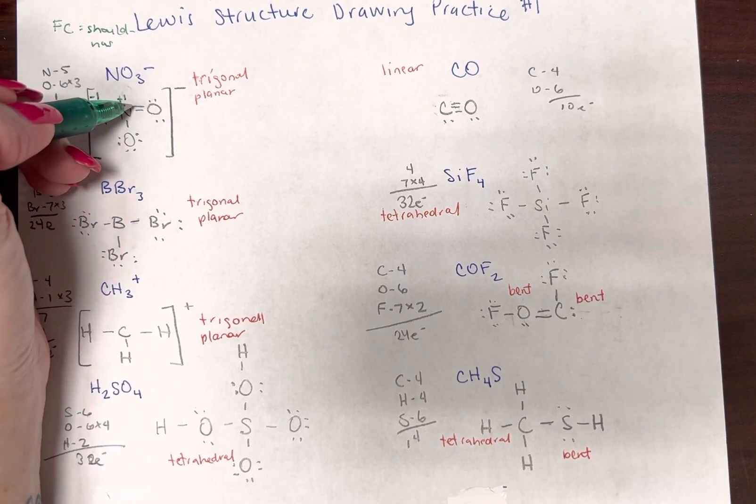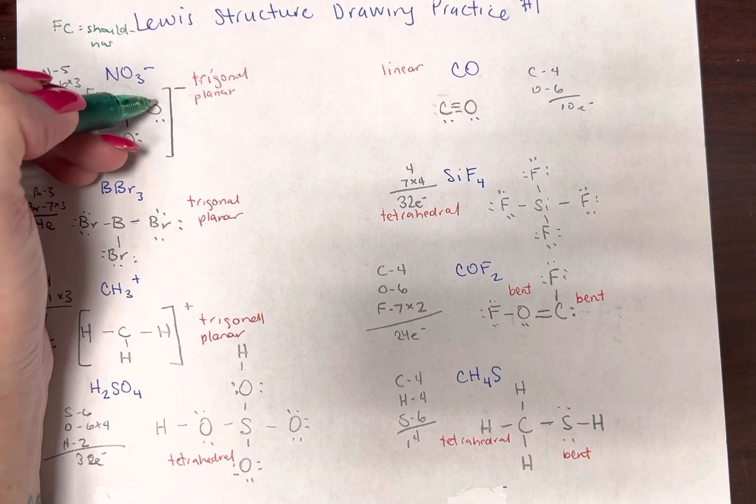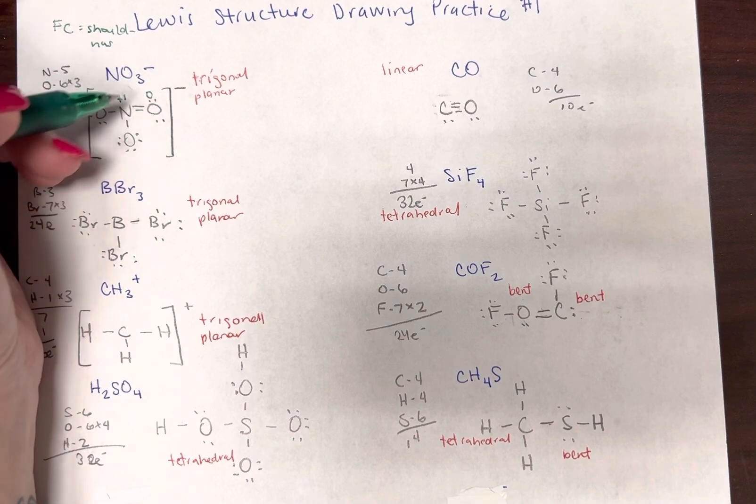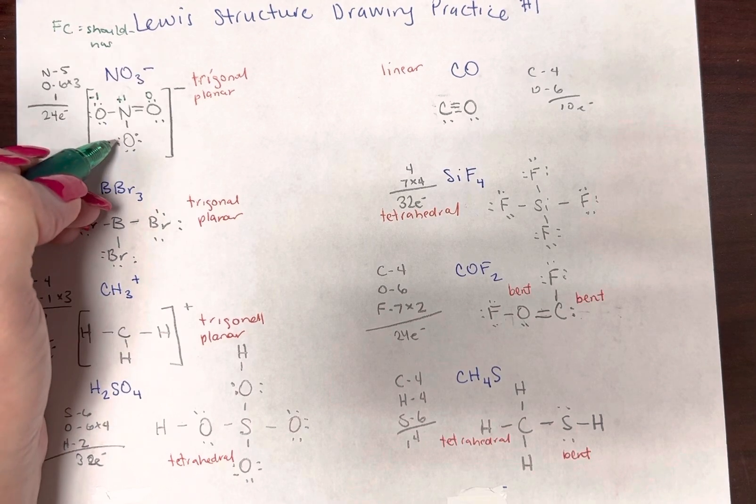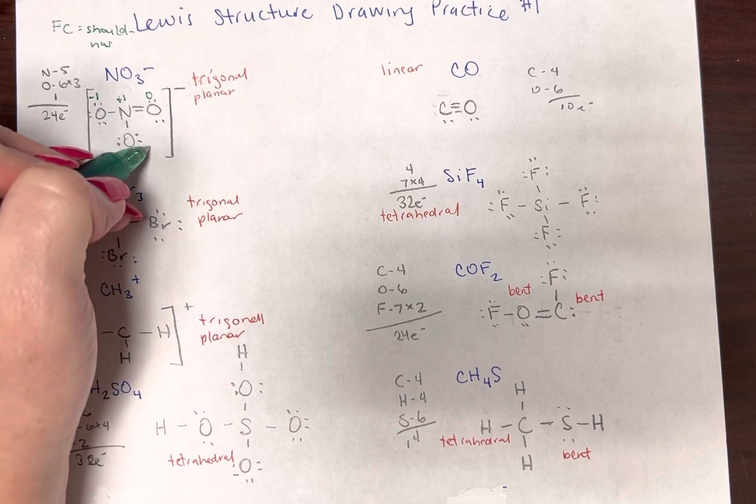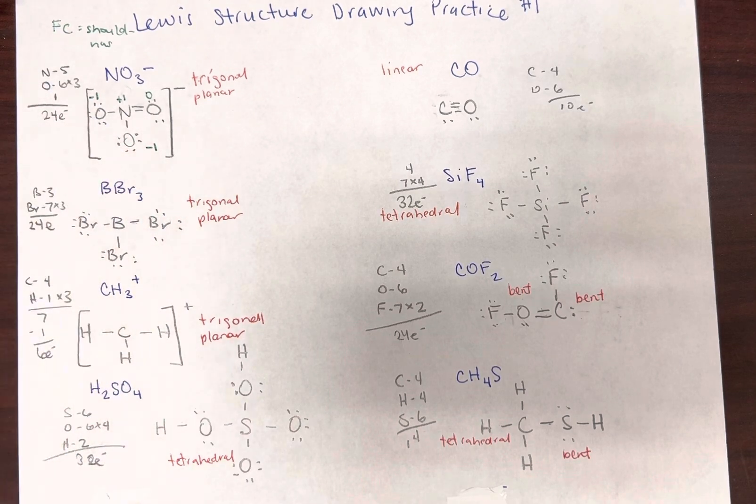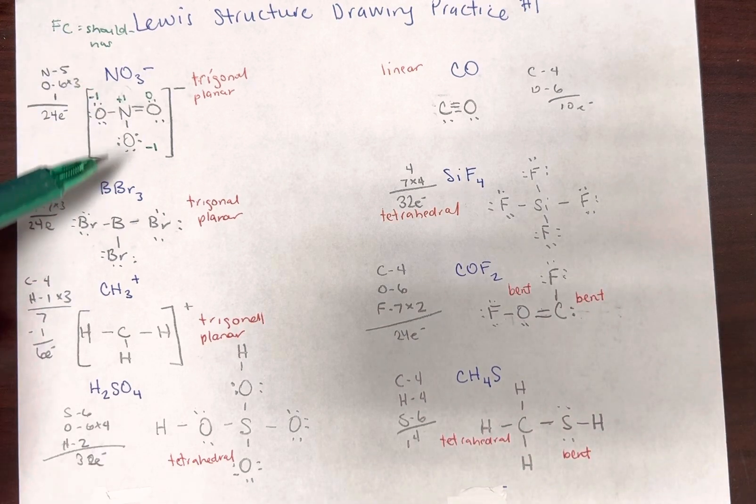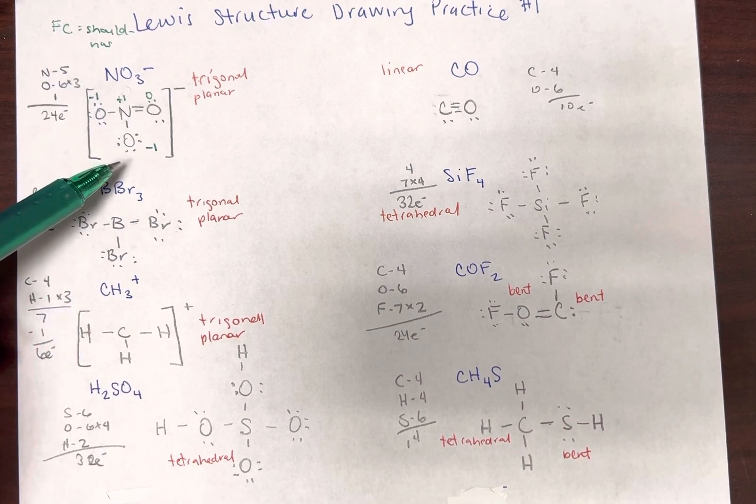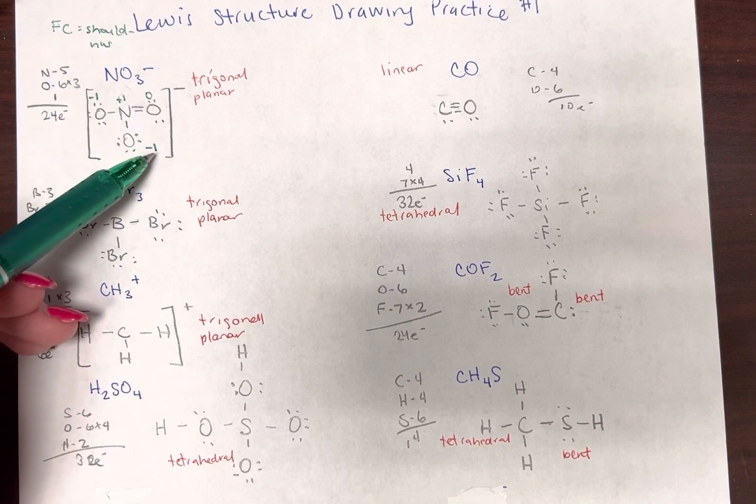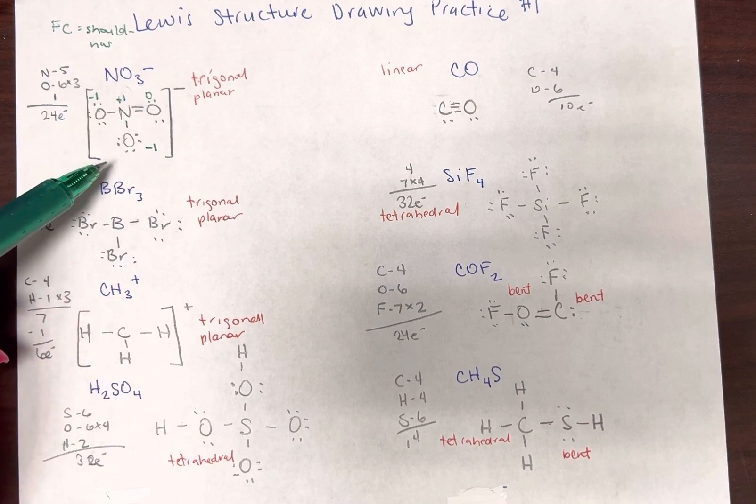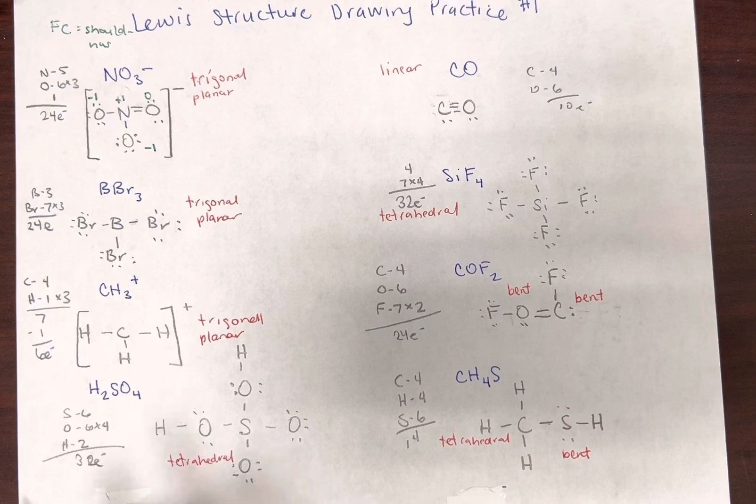This oxygen brings in six. It has one, two, three, four, five, six. So six minus six is zero. This oxygen is the same as this one, and it's minus one. All right, now normally what we would try to do is use this knowledge of formal charges to say, well, is there any way we could make this better? And in this case, the answer is no.